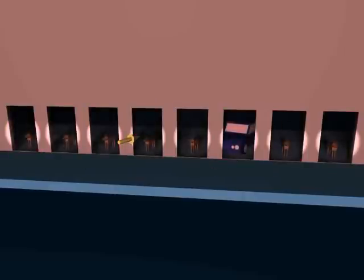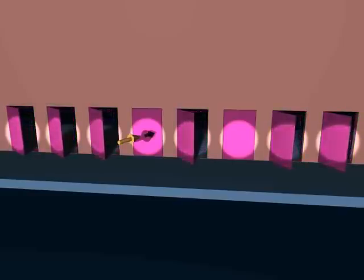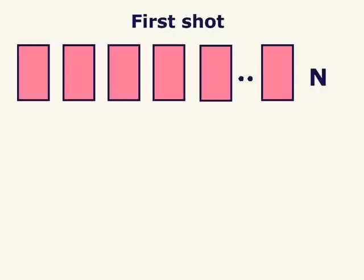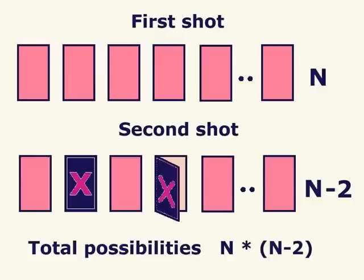Otherwise, it can open only one of the n-2 losing doors or the game ends immediately. In formulas, if the player changes: n possibilities at first shot and n-2 at second. Total number of possibilities is n times n-2.